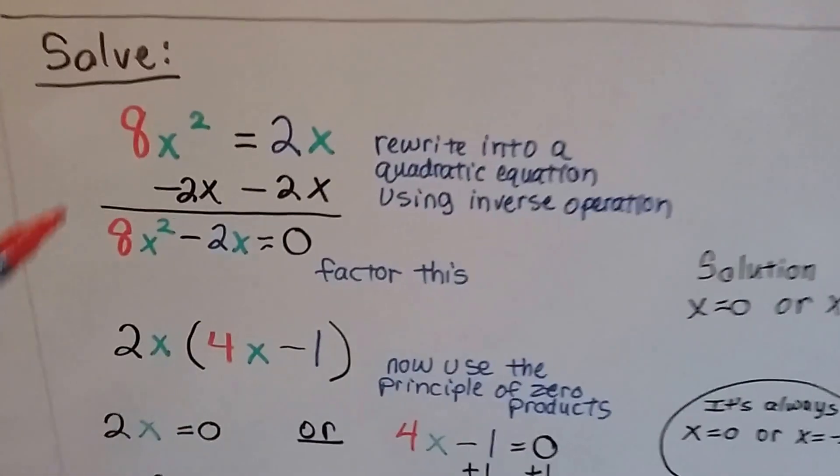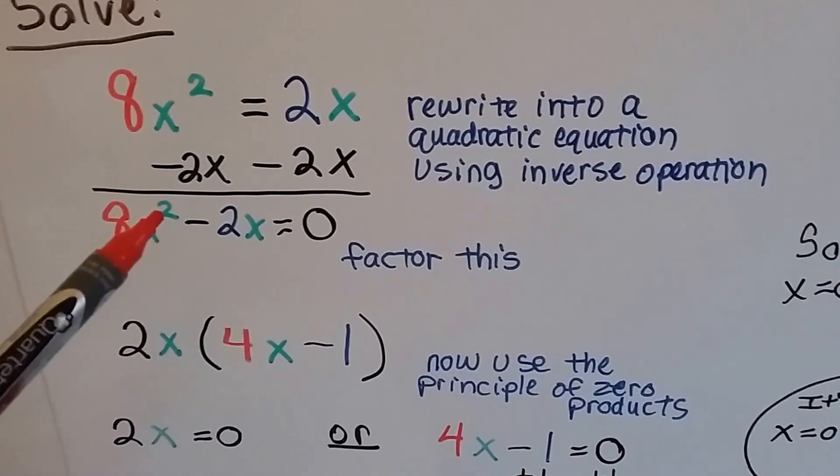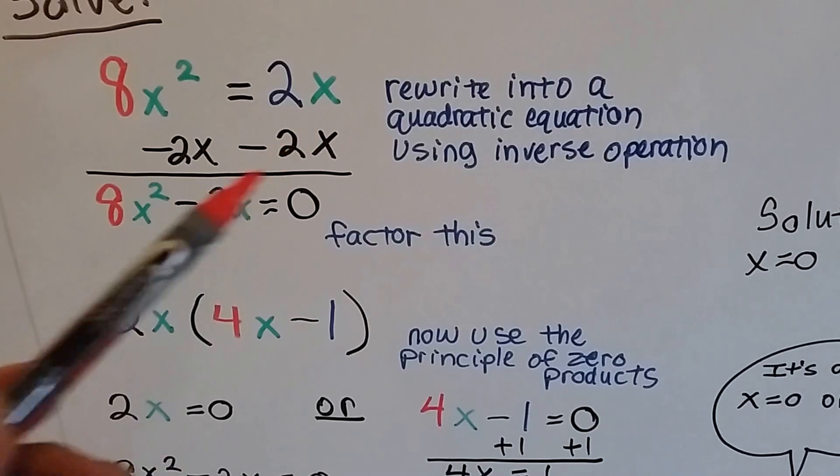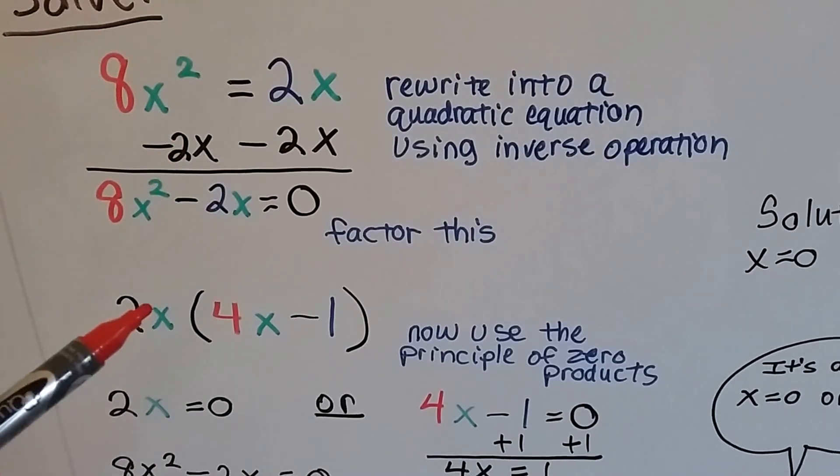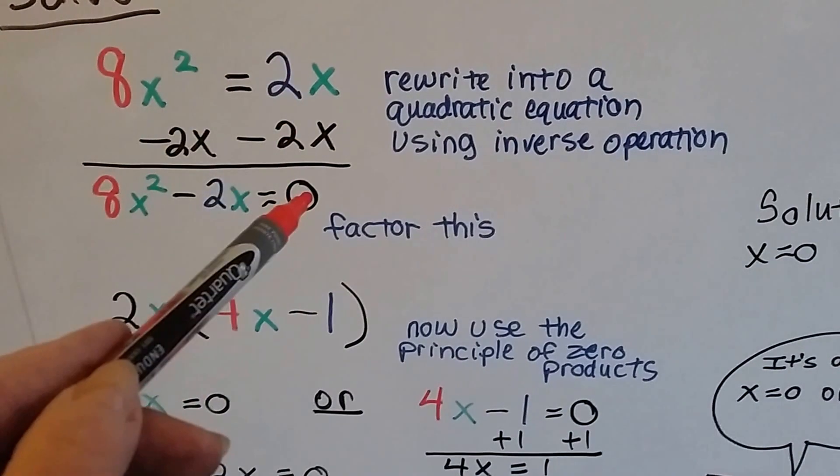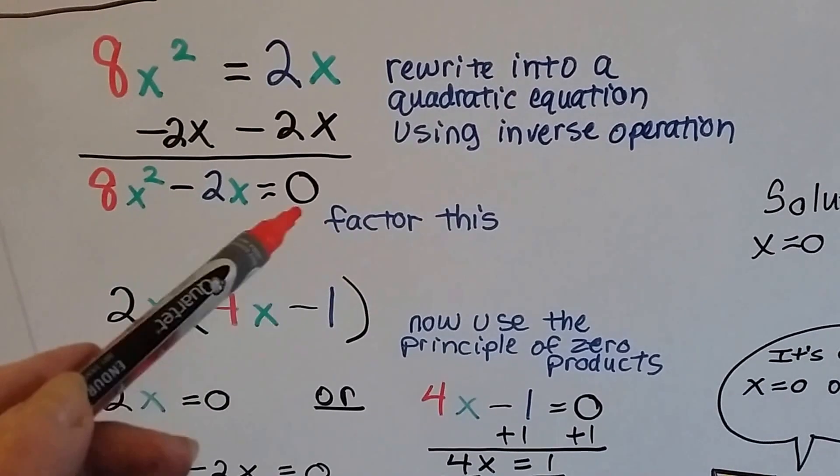Let's try this one. Now we've got 8x squared equals 2x. Well, what we need to do is subtract 2x from each side. Using inverse operations, this becomes a zero and now we've got 8x squared minus 2x. Now we can factor it.